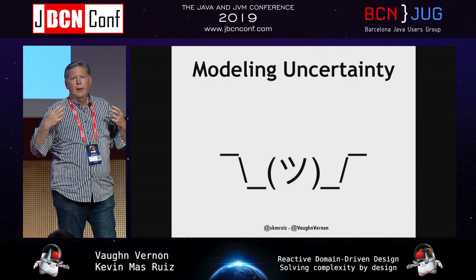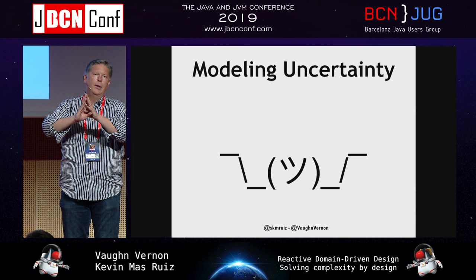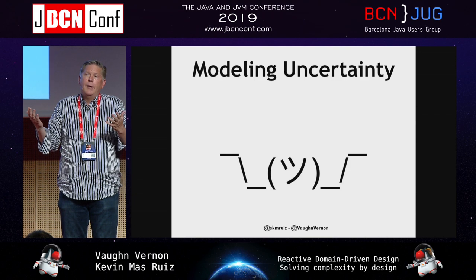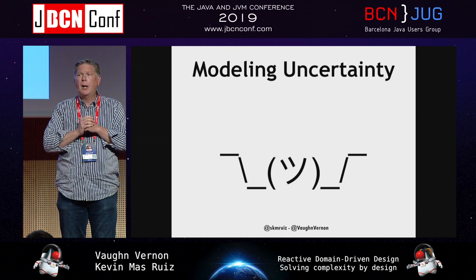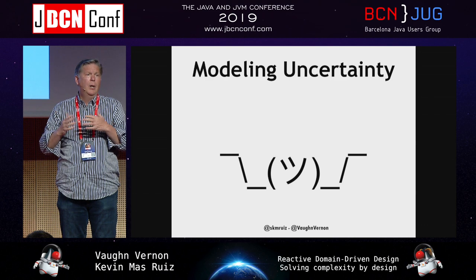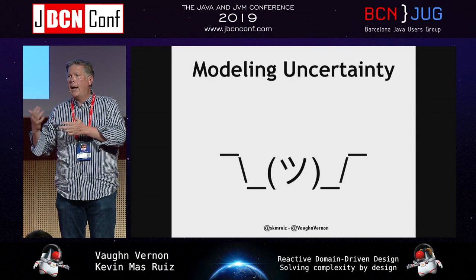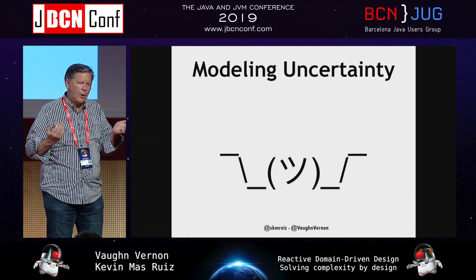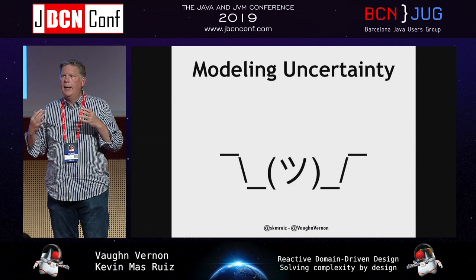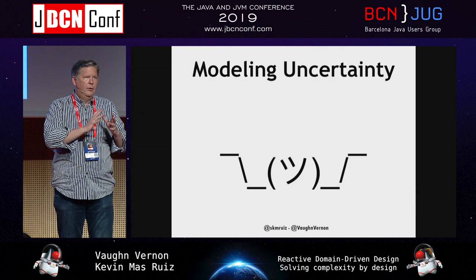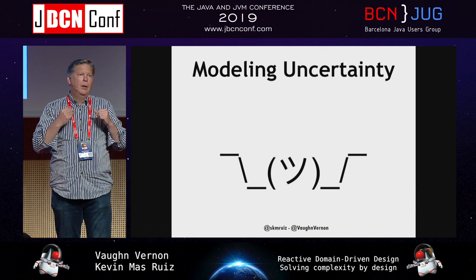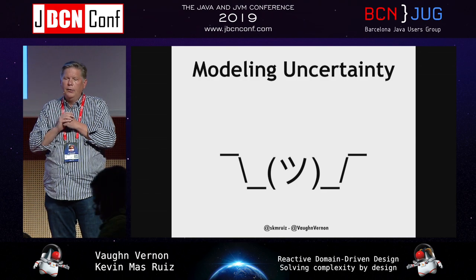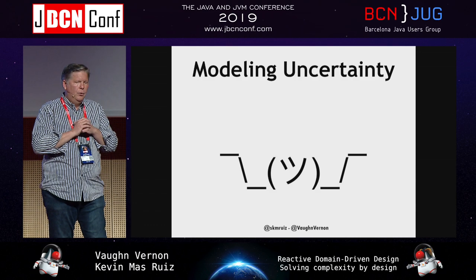Distributed systems will fail. A network partition can cause messages to be delivered out of order. All kinds of things can happen, but we are deliberately trying to push that uncertainty down to the lowest level of the domain model.